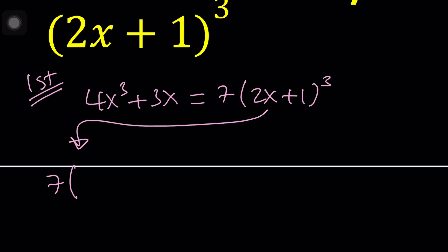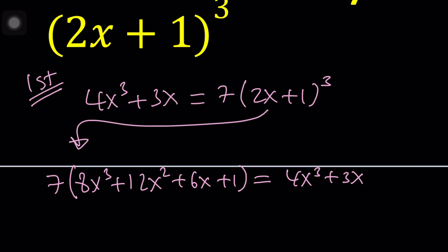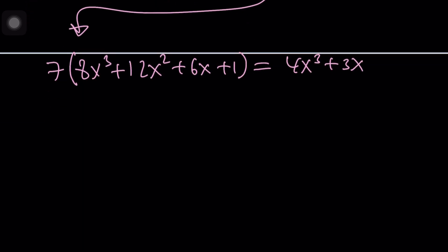We're going to go ahead and expand this. Maybe put that on the left hand side, 7 multiplied by (2x + 1)³. If you expand it, you're going to get 8x³ + 12x² + 6x + 1 and that equals 4x³ + 3x. So 7(8x³ + 12x² + 6x + 1) equals 4x³ + 3x, which gives us 56x³ + 84x² + 42x + 7 equals 4x³ + 3x.